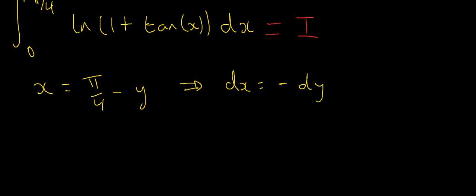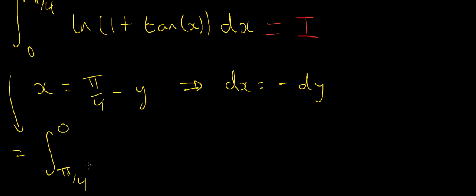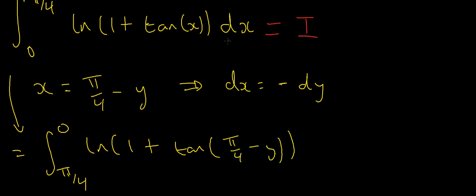If I plug that into my integral, when x equals 0 I have 0 equals π/4 minus y, satisfied when y equals π/4. For the upper limit, when x equals π/4, I get π/4 equals π/4 minus y, satisfied when y equals 0. So I'm integrating from π/4 to 0, with the natural log of 1 plus the tangent of (π/4 minus y), and dx is just negative dy.